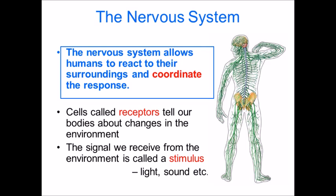In order for us to pick up a change in the environment, we need a set of cells or an organ which can actually detect that change. Those types of cells or organs are called receptors. You're probably aware of them — your eyes, your ears, your nose, the pressure sensors in the skin — and they detect changes in the environment. A change in environment is also known as a stimulus, and that can be something like light and sound. So if there's a change in the light, that's picked up by your eyes, which is the receptor.